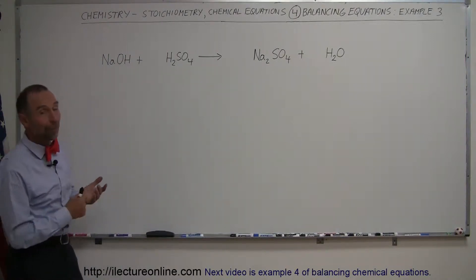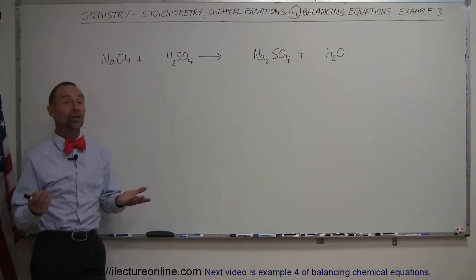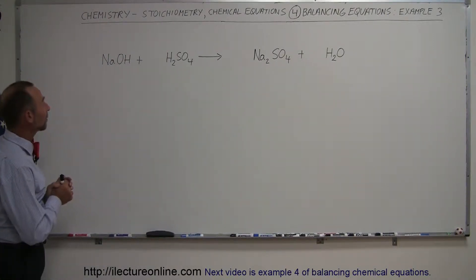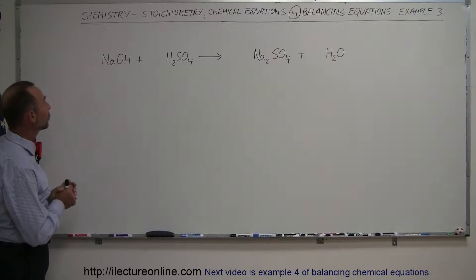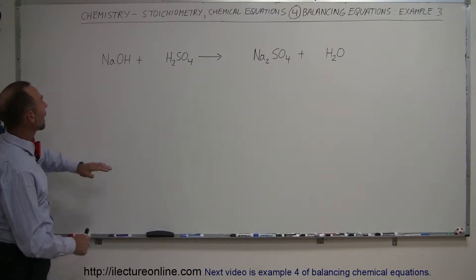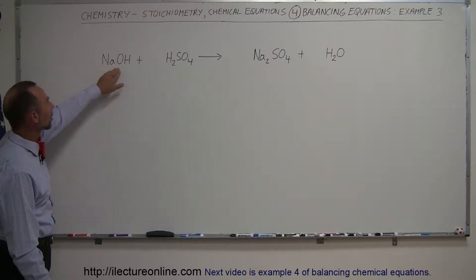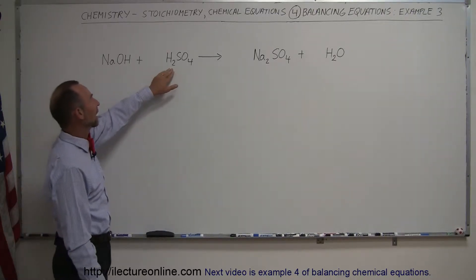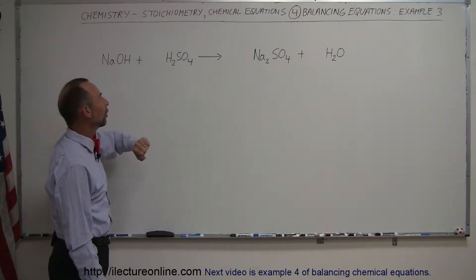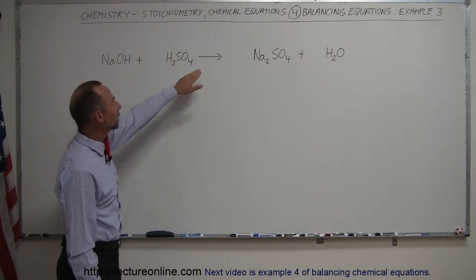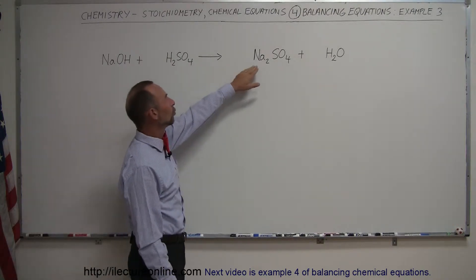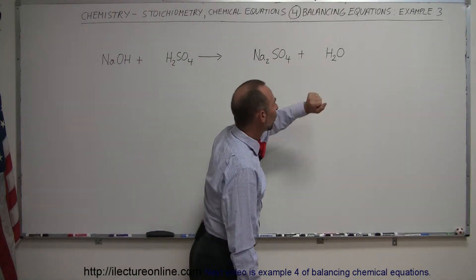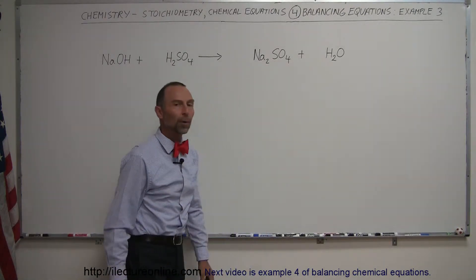Here's our next example of how to balance equations in chemistry. We have two reactants: sodium hydroxide and sulfuric acid H₂SO₄, and that will yield sodium sulfate and water.